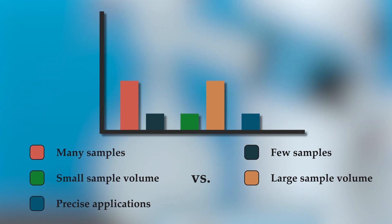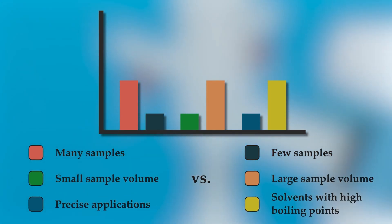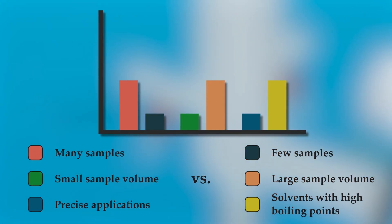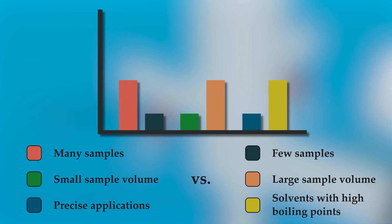Lastly, rotary evaporation is great for evaporating solvents with high boiling points. The use of a vacuum pump for reduced pressure lowers the boiling point of the solvent, allowing them to be evaporated with minimal heat.